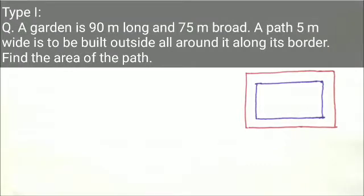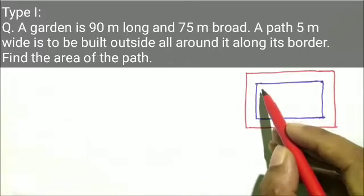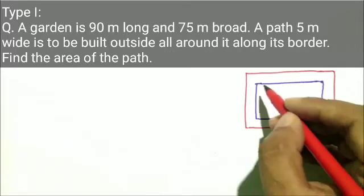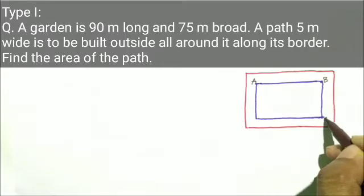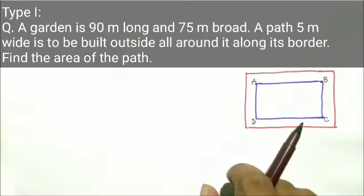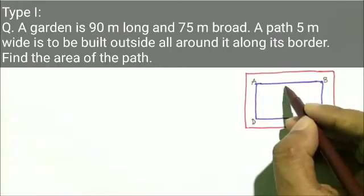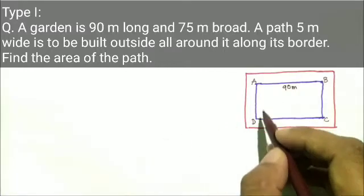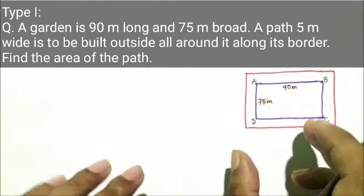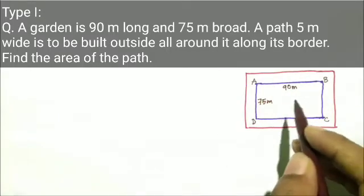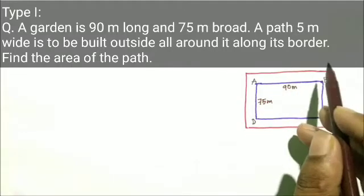You can see the equation along with the figure. This is Type 1. In this case, a garden is 90 meters long and 75 meters broad. A path 5 meters wide is to be built outside all around it, along its border.